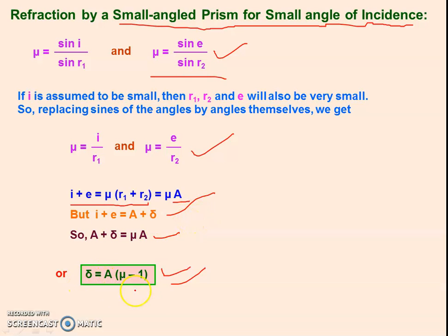This equation will be required in dispersion of light through the prism. When a light ray is incident at the prism, it splits into 7 colors — this phenomenon is called dispersion. In the next lecture, we will go through the dispersion of light through the prism. That is the topic for today. Thank you very much.